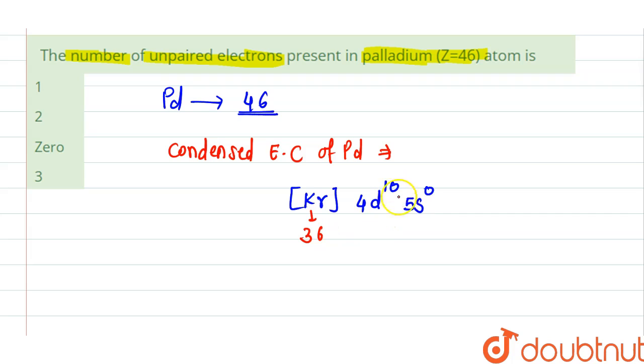So in this subshell there are 5 orbitals and 10 electrons are present.